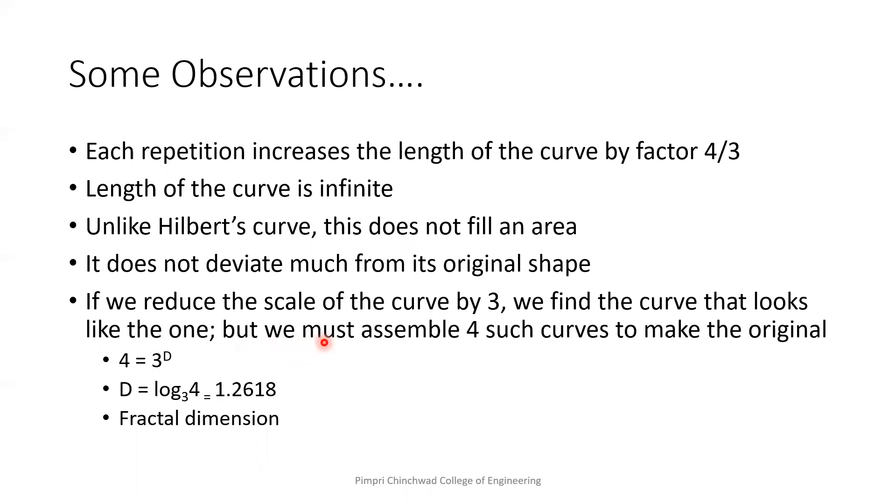If we reduce the scale of the curve by three, then we will find the curve that looks like the original one. But we must assemble four such curves, four such segments to make the original one. So we can say four equals to three raised to the dimension or d equals to log of four to base three. So this will approximately come to 1.2618. So the fractal dimension is 1.2618 while the topological dimension is 1.